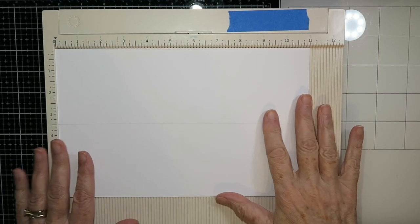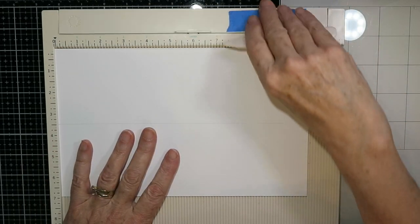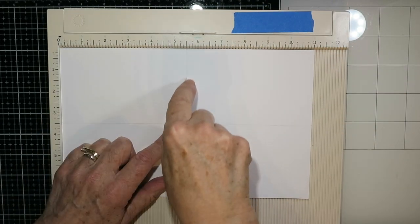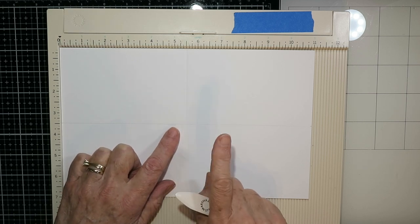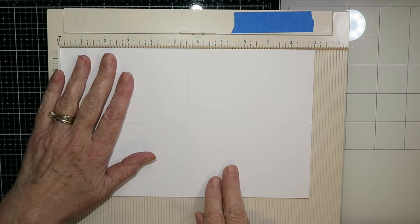You want to draw a pencil line right down the middle at the three and a half inch mark. And then on your scoreboard with the 11 inch side facing up the top you're going to score down on one side at the five and a half inch mark only to the pencil line at the three and a half inch mark. So score down at five and a half inches.